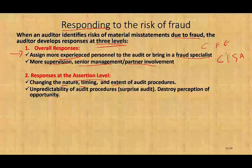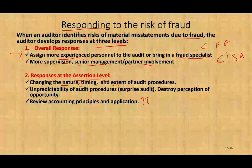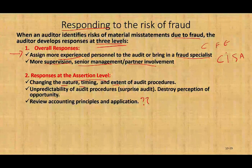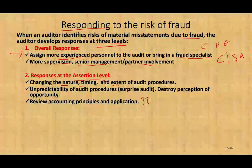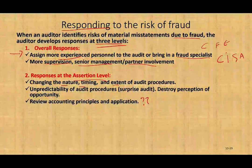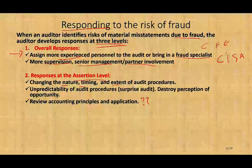The third thing at the assertion level is to review the accounting principles and their application. Are they using the appropriate accounting principles? Are they using correct GAAP? Because if a company is committing fraud in one area, there's a chance they're committing fraud in other areas. Research and experience show that fraud is generally not limited to one area. Every transaction affects at least two accounts, and once a company is committing fraud, they tend to commit it in more than one location — it becomes the culture of the company.